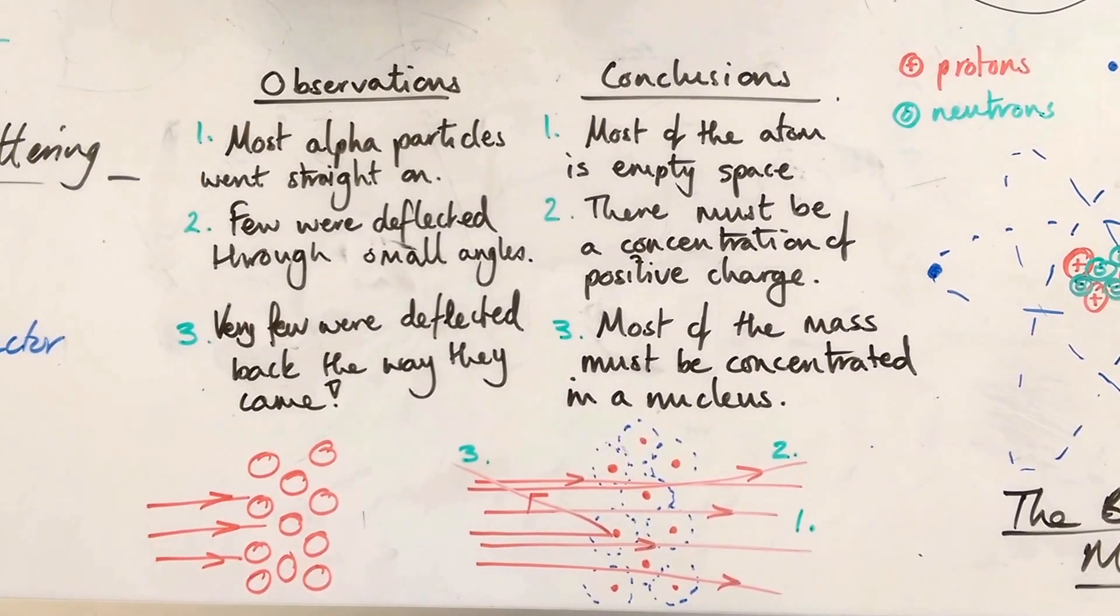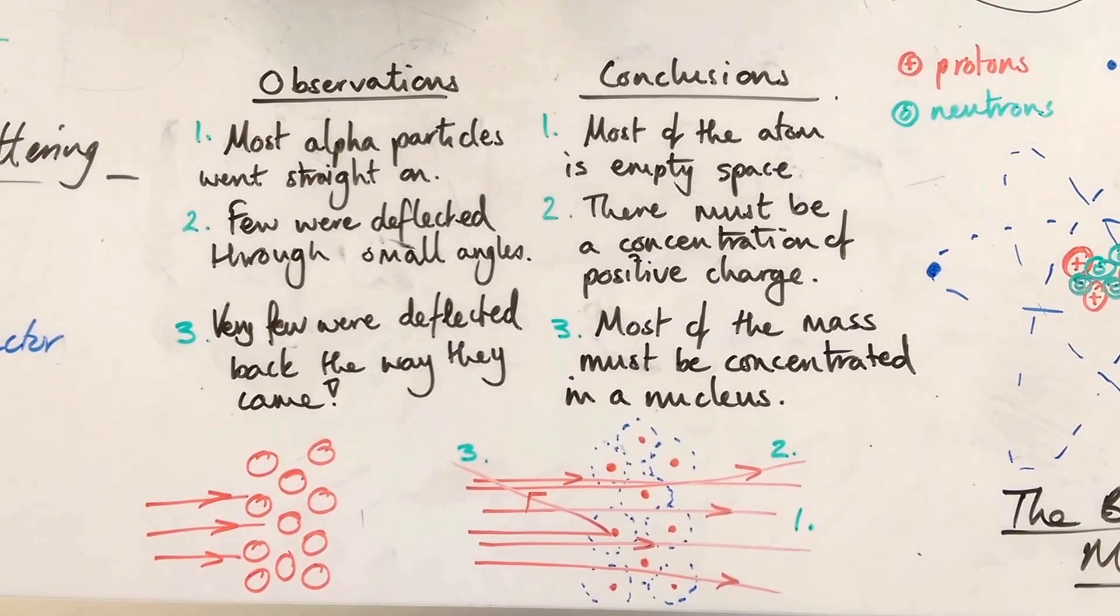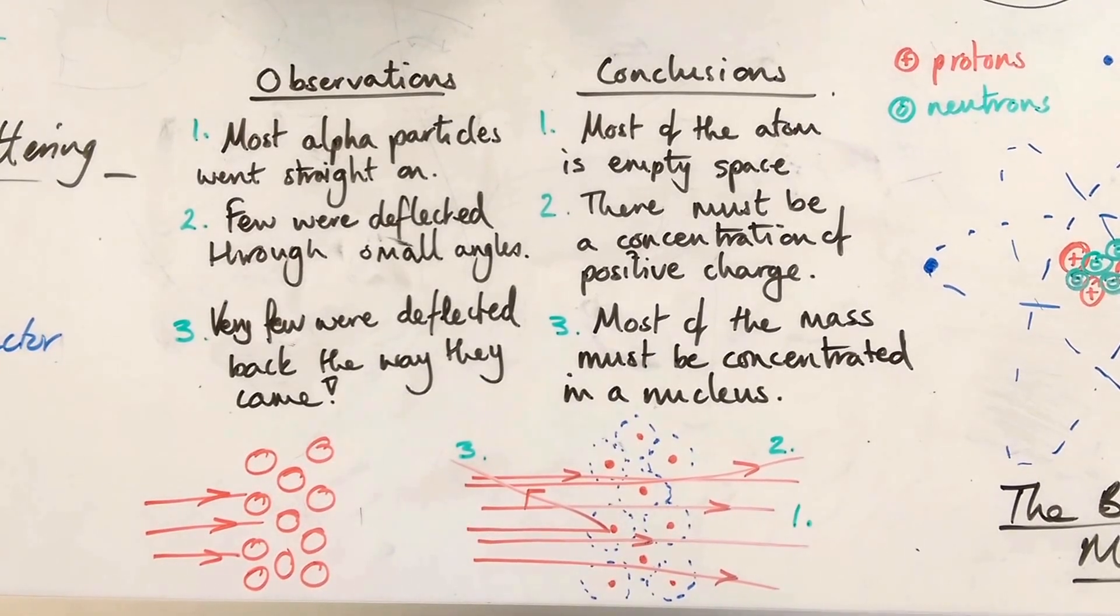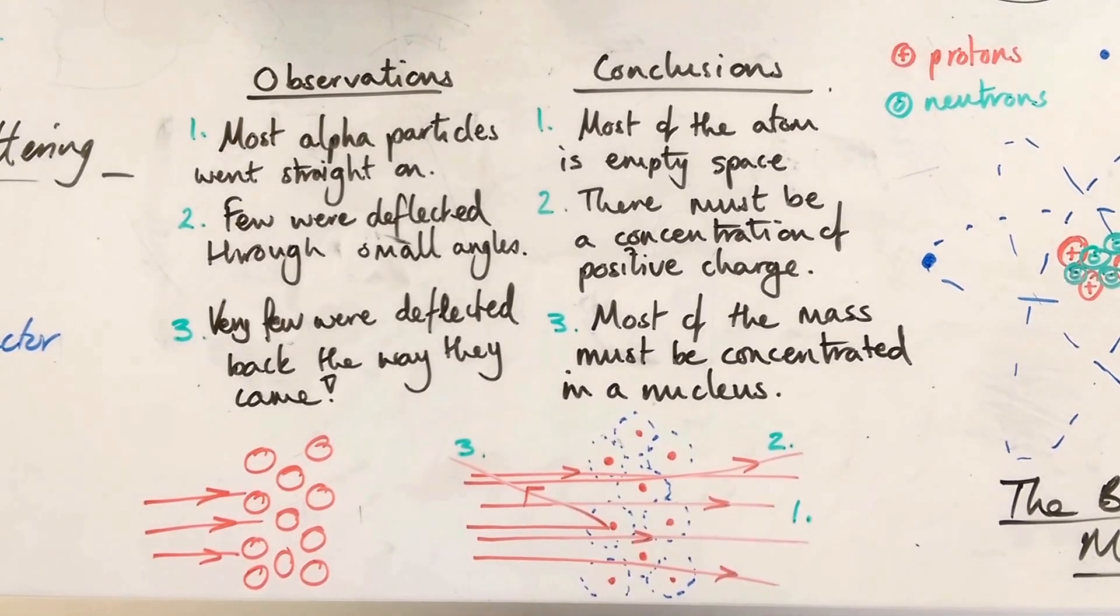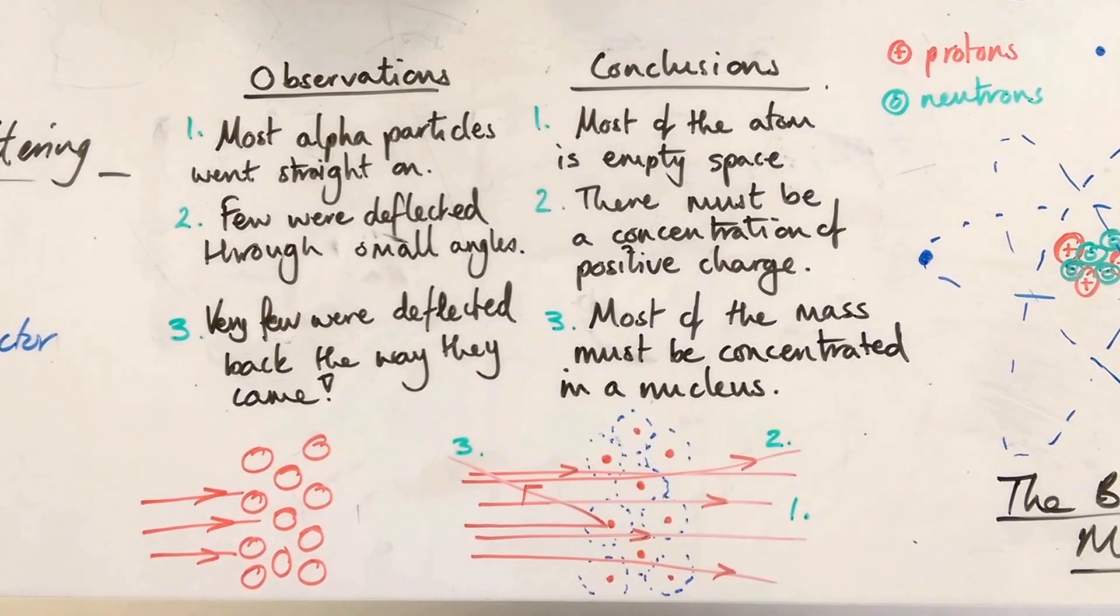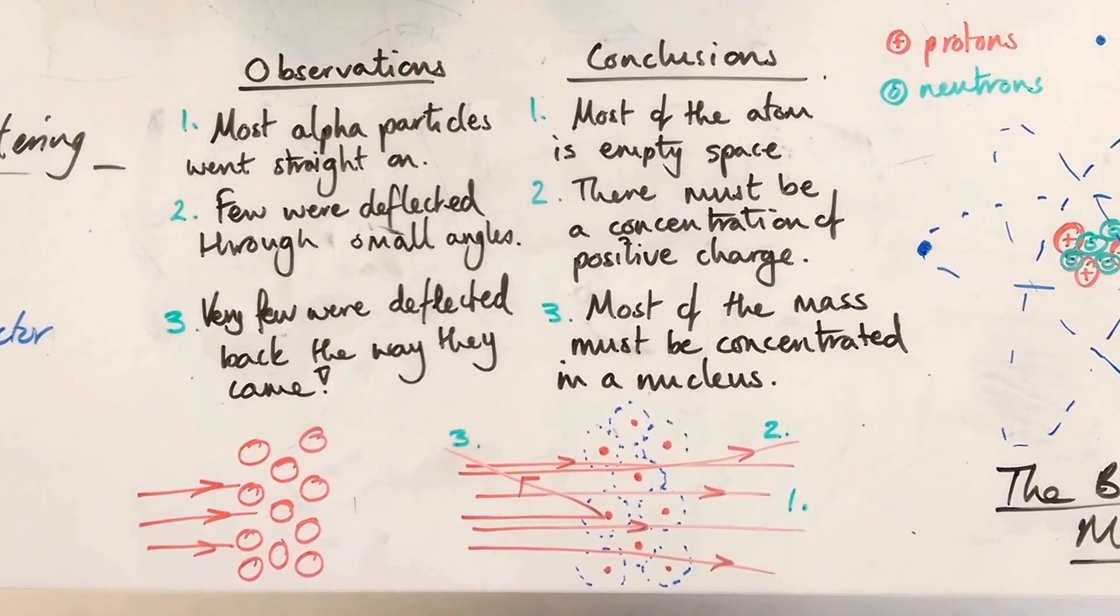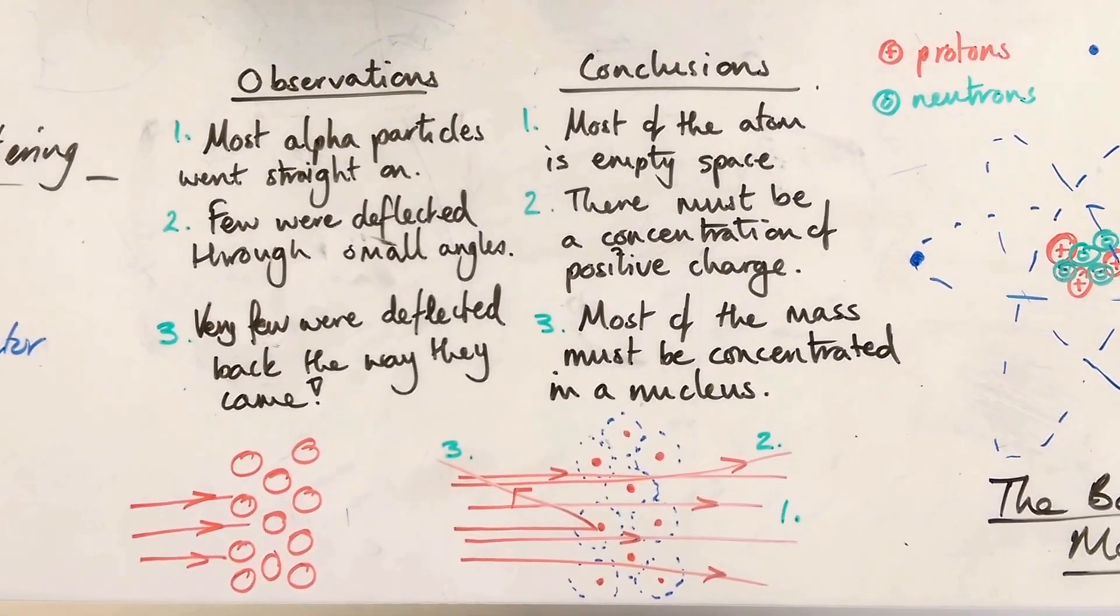Two, a few of them were deflected through small angles, had their tracks bent slightly. And the conclusion with this, there must be a concentration of positive charge. They knew the alpha particles were positive.